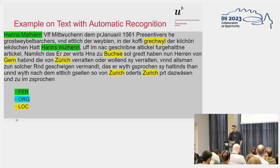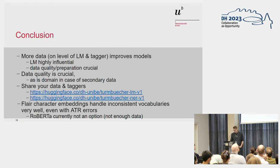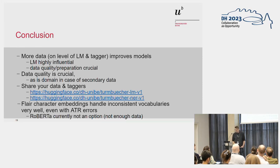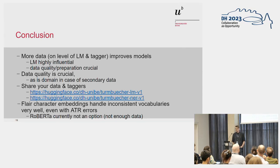In conclusion, it's pretty obvious but still: more data usually improves the models, but that's not the only thing — it should also be data that fits the domain well. Data quality and preparation are extremely important. And this is more like a general call: please share your data and your taggers, especially in the historians' community. Please share all the stuff you have so we can use it. And in the end, Flair is just really, really good at handling inconsistent vocabularies. We hope that one day we have enough data to train a good BERT model.